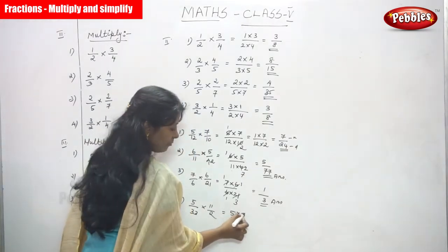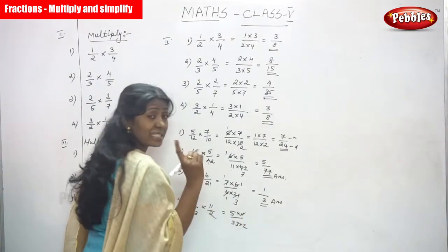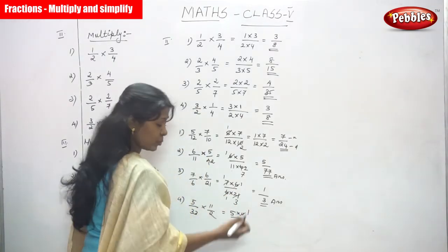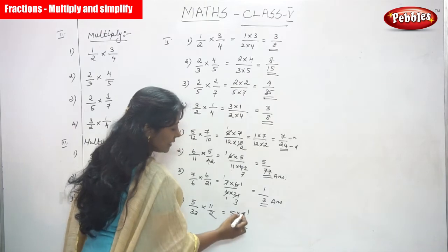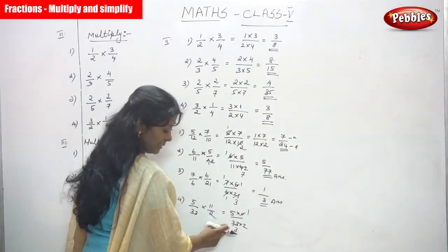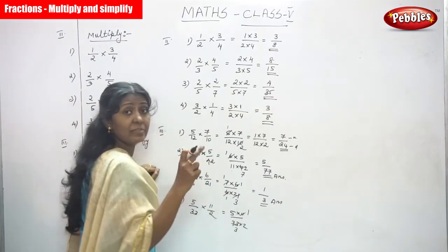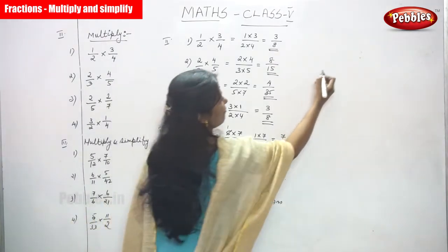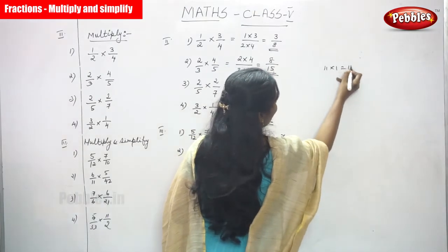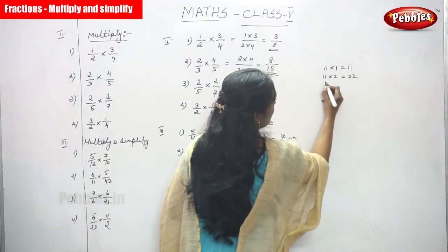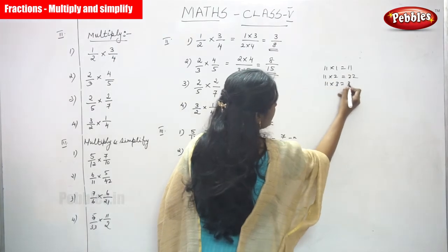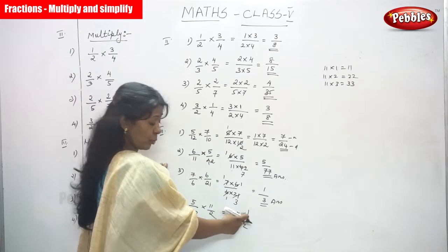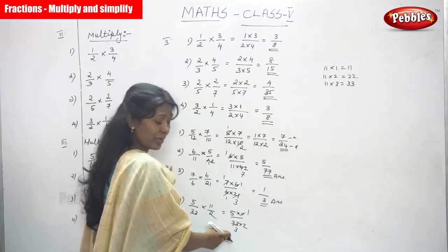Now cancel with 11: 11 ÷ 11 = 1 and 33 ÷ 11 = 3. Because 11 × 1 = 11, 11 × 2 = 22, and 11 × 3 = 33. So after cancelling, 11 becomes 1 and 33 becomes 3.